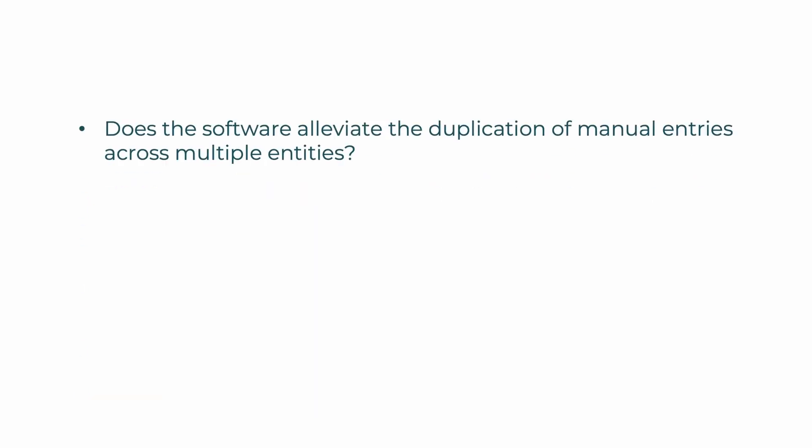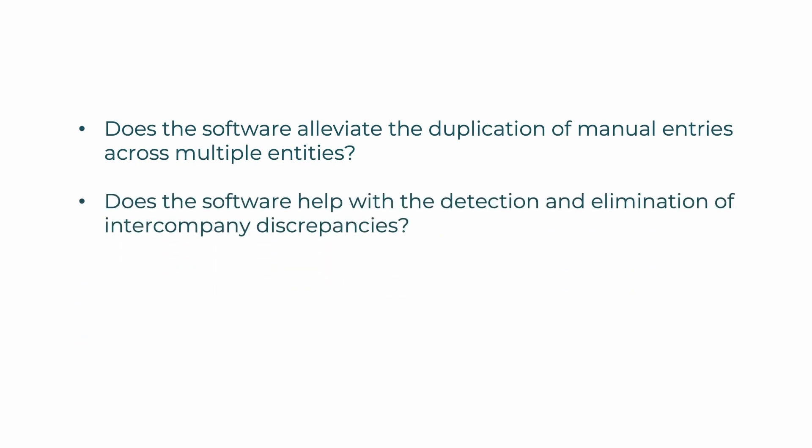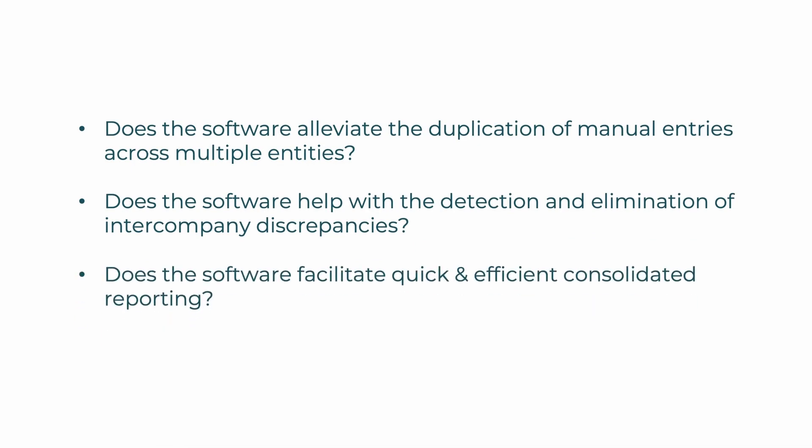The plugins we're going to review today are Mayday and Translucent. To test both, we've run real-life month-end examples in the software, looking specifically to see if the software addresses common issues that arise at month-end when managing intercompany transactions: does it alleviate the duplication of manual entries across multiple entities, help with the detection and elimination of intercompany discrepancies, and facilitate quick and efficient consolidated reporting?